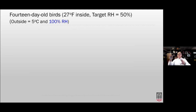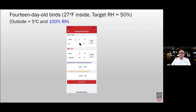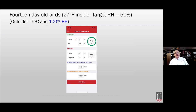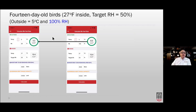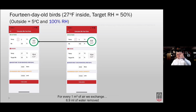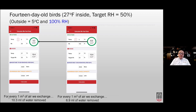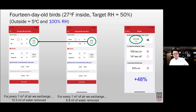14-day-old birds, inside 27°C at 50% humidity, outside 5°C at 100% humidity. At 5°C and 100% humidity, there are 6.5 milliliters of water per cubic meter of outside air — roughly twice the 3.2 milliliters at 50% humidity. For every cubic meter exchanged we're now only removing about 7 milliliters of water, versus 10.3 before — we're less efficient because the incoming air is wetter. We can still dry the house, but we have to ventilate about 50% more on a cool rainy day versus a cool dry day.